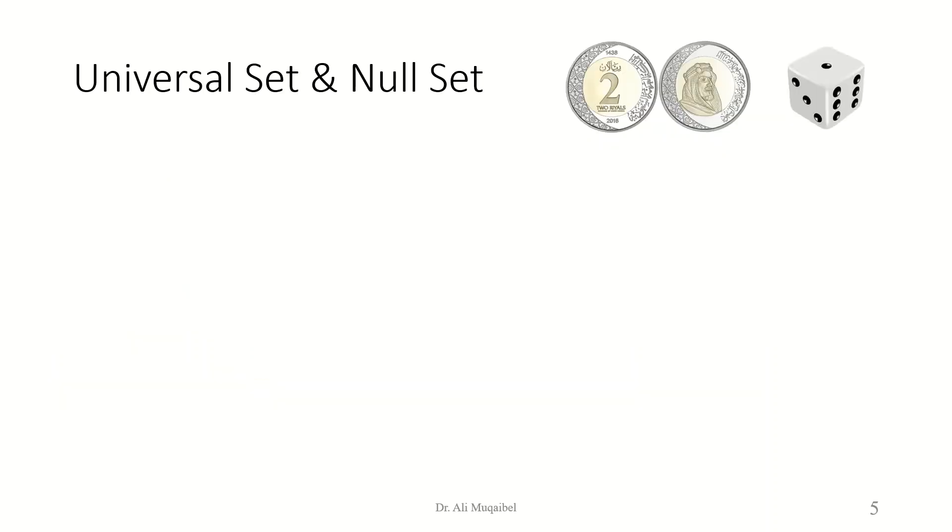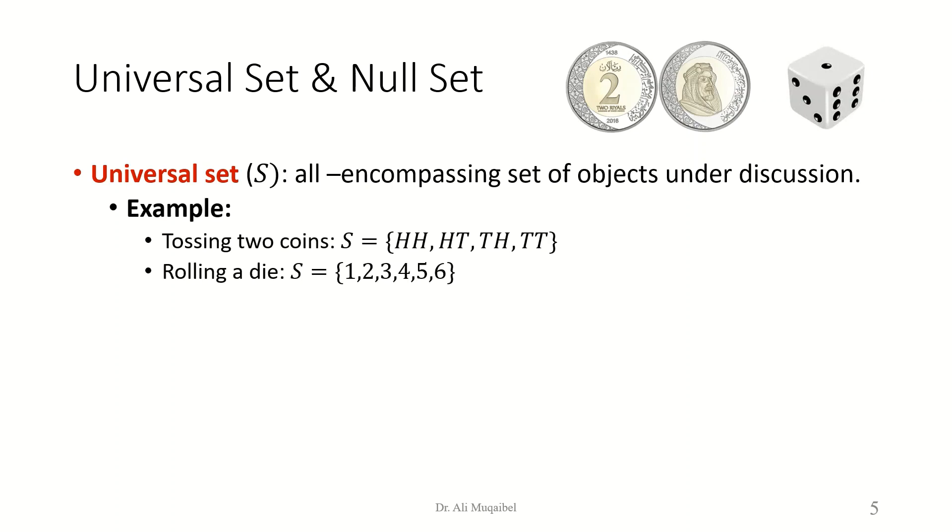We define the meaning of universal set and the null set. So we have two experiments. Basically, we look at tossing a coin and rolling a die. We define the universal set as the set of all possible outcomes for the given experiment. Now, for example, if you have two coins and you're tossing them, you can get a head or a tail. If there are two coins, you can get four different possibilities, head-head, or head-tail, tail-head, or finally tail-tail. If you consider all possibilities, we call it the universal set, because any outcome of the experiment will belong to the set. If you are rolling a die, like in the second example, the possible outcomes are one out of six possibilities. So this set is represented as the universal set, and we use capital S, which is reserved for the universal set.